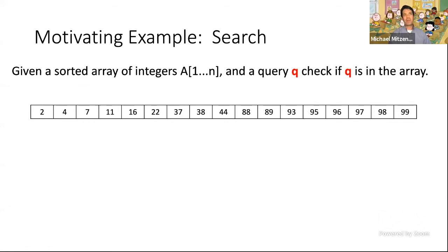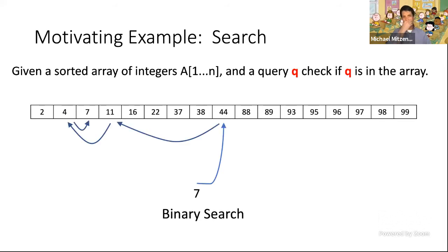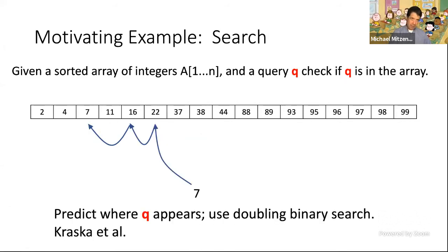Let's start with a simple example of search. We have an array of integers and a query — we need to find it in the array. We can do binary search: start in the middle and find the element. An alternative, if we have a prediction, is to start at the predicted place and use a doubling binary search — look one, two, four positions to the left until we find an interval where the element appears, then use binary search within that interval.